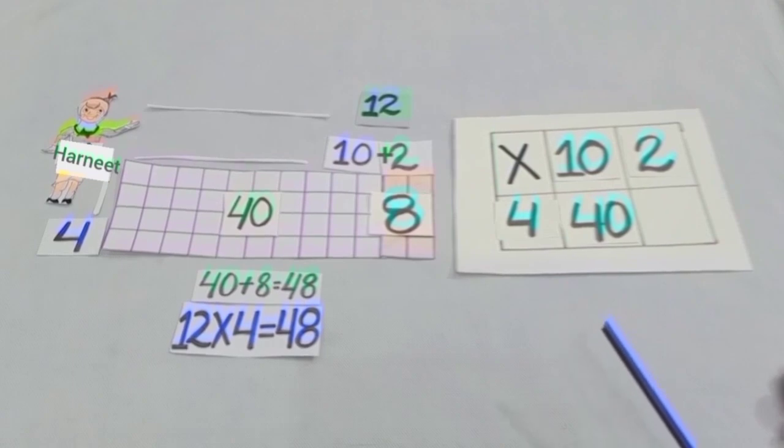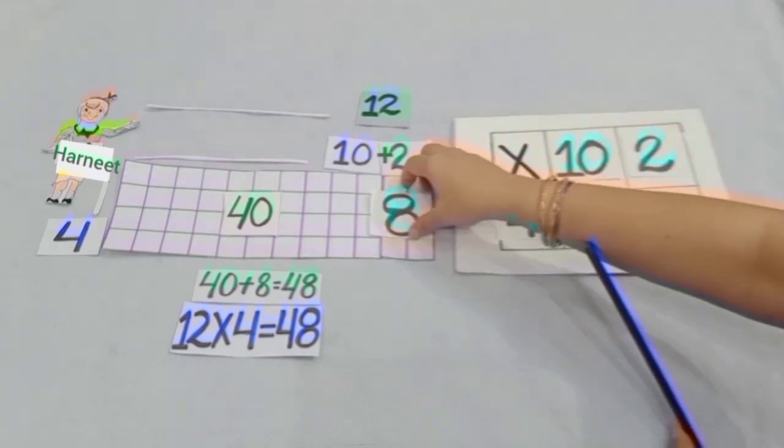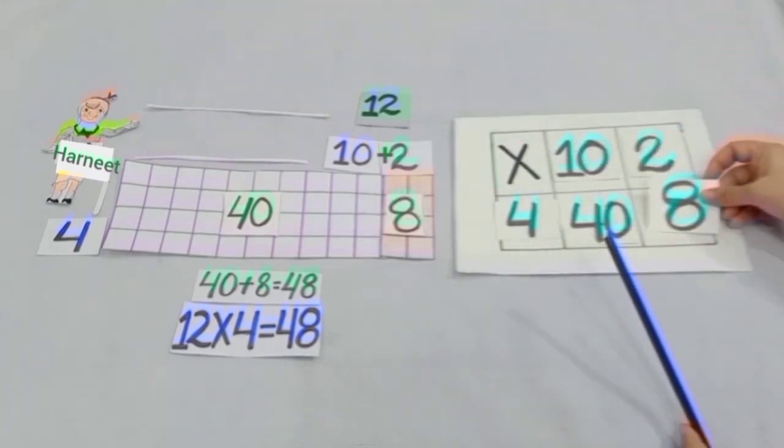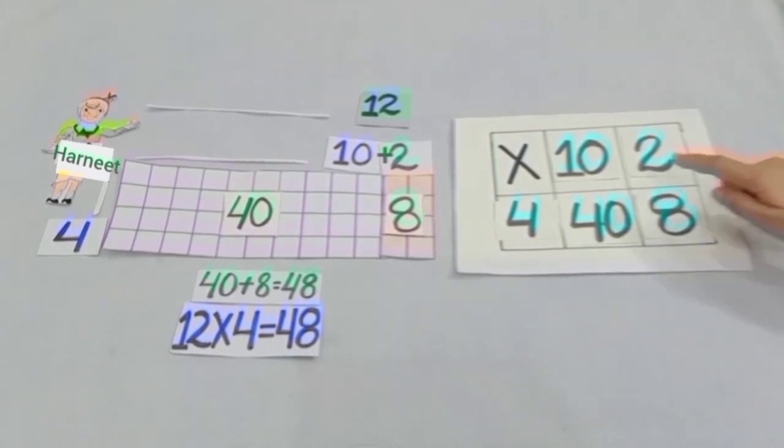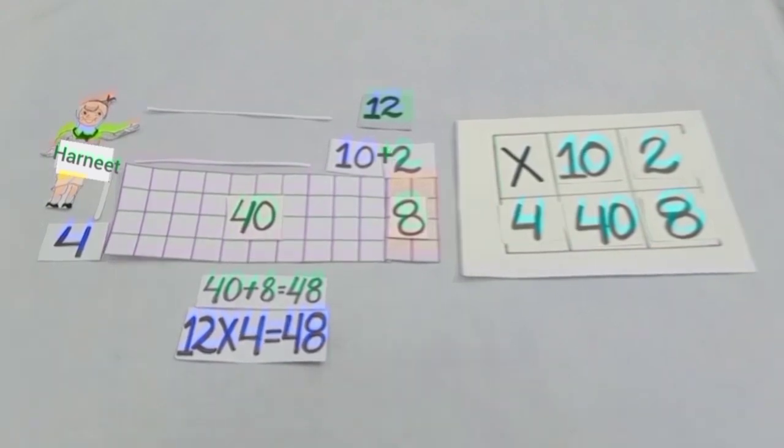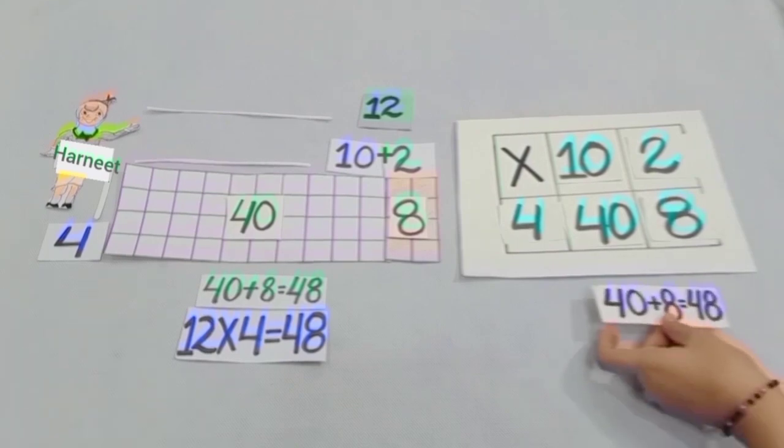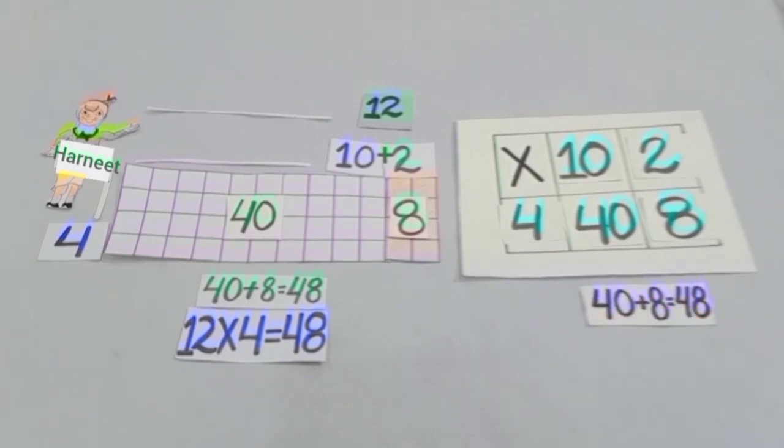Now, the number of colored boxes is 8, and we will write 8 here. Students, you can also see 2 into 4 is equal to 8. After addition of 40 and 8, we get 40 plus 8 is equal to 48.